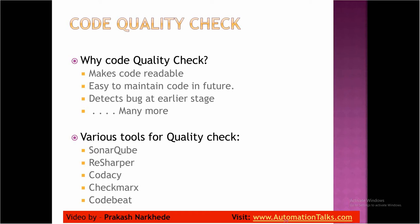Remember, code quality check is not only for developers who develop the actual application — it is also important for automation engineers and automation developers who write automation test scripts. Your test scripts carry the same importance as the actual development code. As and when you add new features or make changes to your product code, you need to update your automation scripts as well. Though you are not delivering the automation test code to the client, it matters a lot to you since you are the one working on it. That's why code quality check is important for automation testers too.